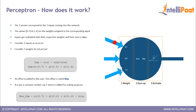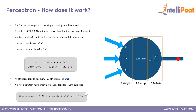Here we have three arrows corresponding to three inputs coming into the network. For these three inputs we have corresponding weights: input 1 is associated with weight 0.7, input 2 with weight 0.6, and input 3 with weight 1.4. These inputs are multiplied with their respective weights and their sum is taken — so x1×0.7 + x2×0.6 + x3×1.4. To this sum we add an offset called bias, which is a constant used for scaling purposes.